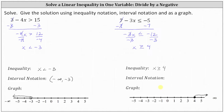For interval notation, we have the interval from four to infinity. Since the interval does include four, we use a square bracket to the left of four. And for infinity, we always use a right parenthesis. I hope you found this helpful.